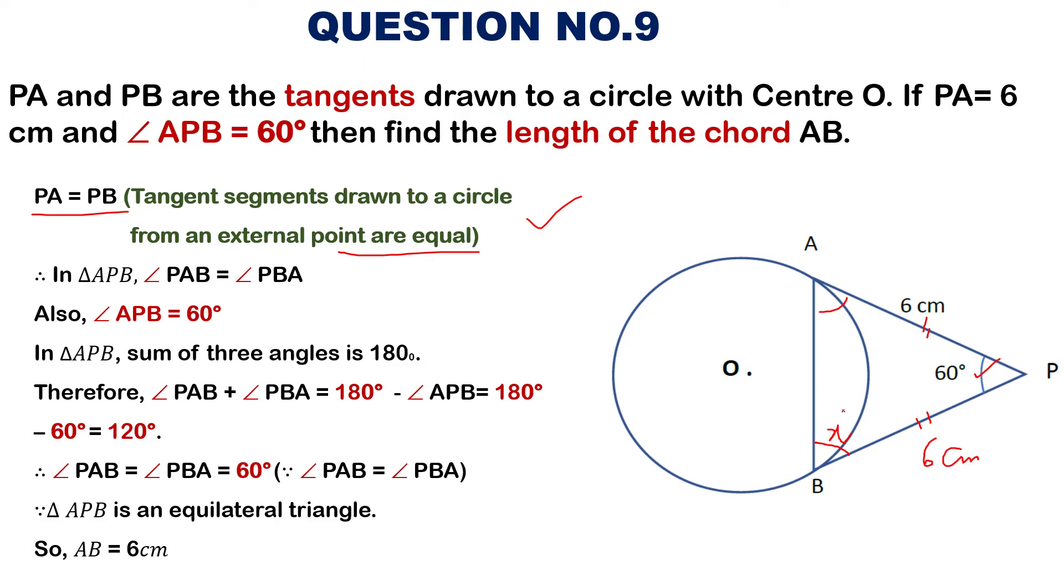So, we let one angle be X, so the other will be X. When we apply the angle sum property of a triangle, X plus X plus 60 degree equals 180 degree. So, finally, X equals 60 degree. This means angle PAB and angle PBA will be 60 degree.